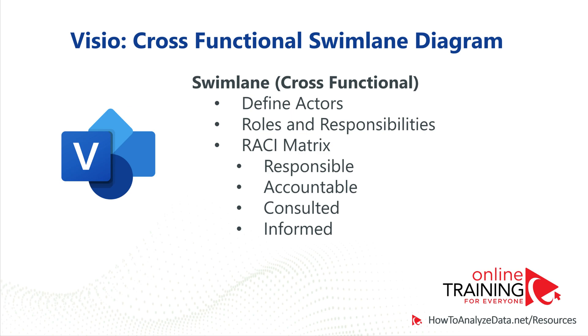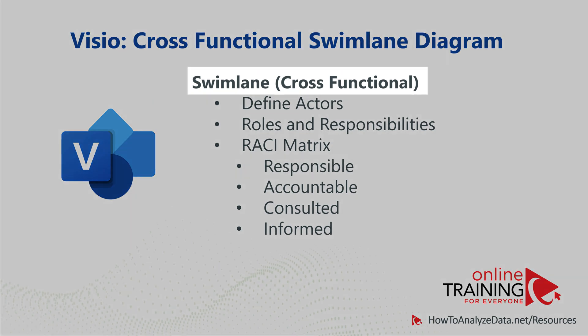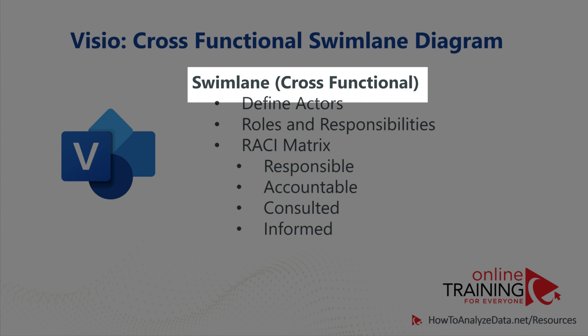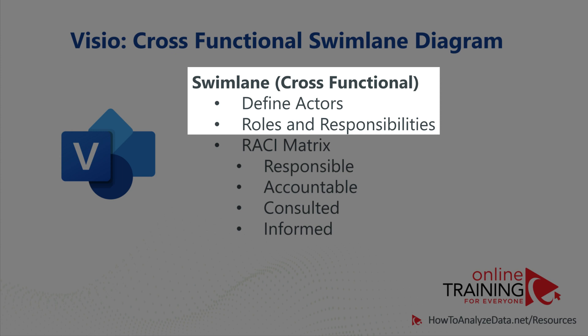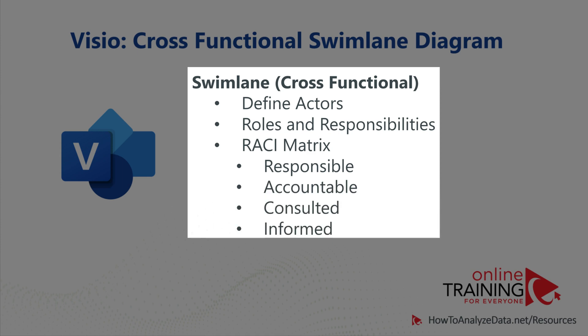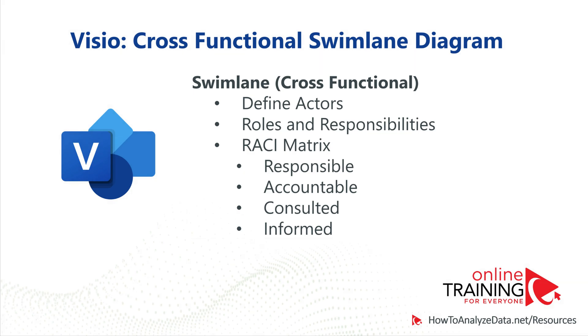There are three main scenarios when you might consider using a cross-functional Swimlane diagram. The first scenario is when you need to define specific actors — who is doing what in the process. The second scenario is when you need to define specific roles and responsibilities. The third scenario is a combination of the first two, as organizations frequently use a RACI matrix to define who is responsible, accountable, consulted, and informed in the process flow.